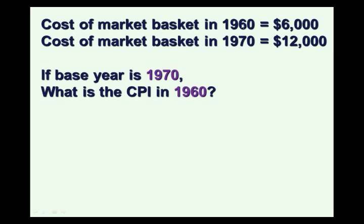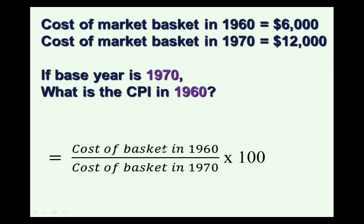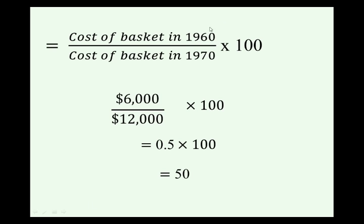Suppose the cost of the market basket in 1960 was $6,000, and the cost of the market basket in 1970 is $12,000. If we make 1970 the base year, the Consumer Price Index in 1960 is the cost of the market basket in 1960 relative to the cost in the base year 1970, times 100. That gives us $6,000 over $12,000, times 100 — which is 0.5 times 100, or 50. So the Consumer Price Index in 1960 is 50 when we use 1970 as our base year.